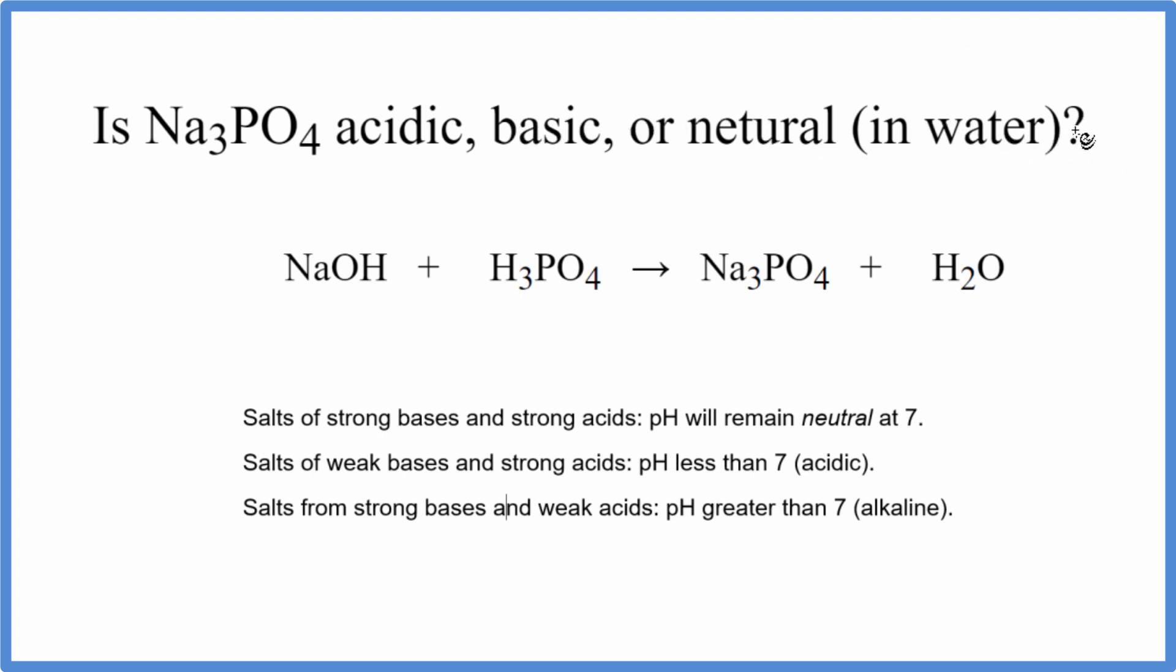So to answer that, we need to know what two compounds, what acid and base, made the sodium phosphate. In this case, we have sodium hydroxide plus phosphoric acid. When these two react, we get our sodium phosphate and we get water.